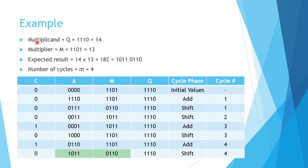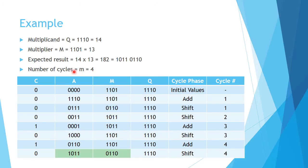Now we're going to do a quick example where we set our multiplicand Q to 1110, which is 14, and our multiplier M to 1101, which is 13. Our expected result is 14 times 13, which is 182, equal to 10110110 in binary. We set our number of cycles to the number of bits used to represent the multiplier, which is 4 bits, so small m equals 4.